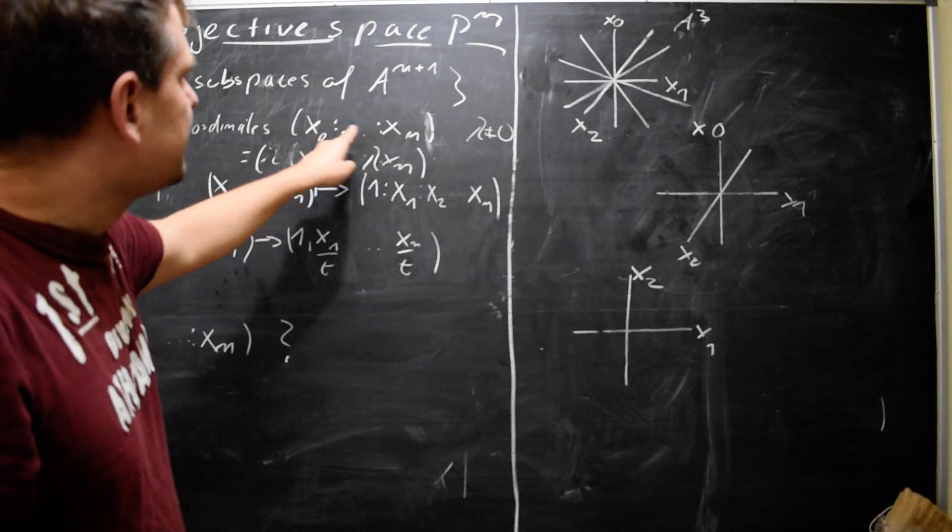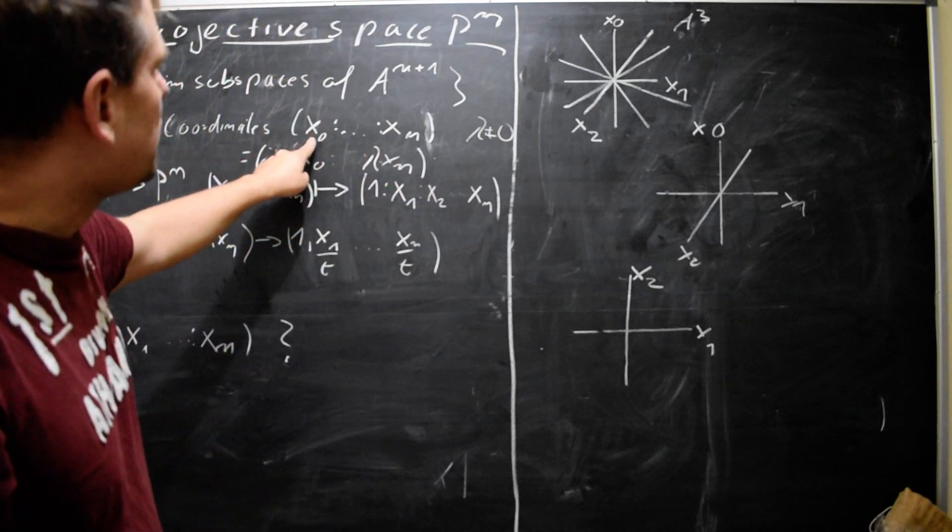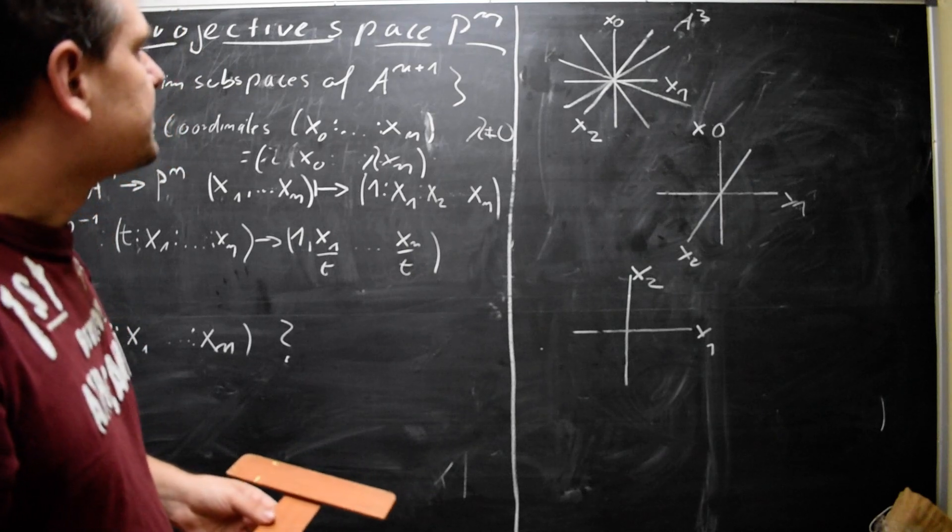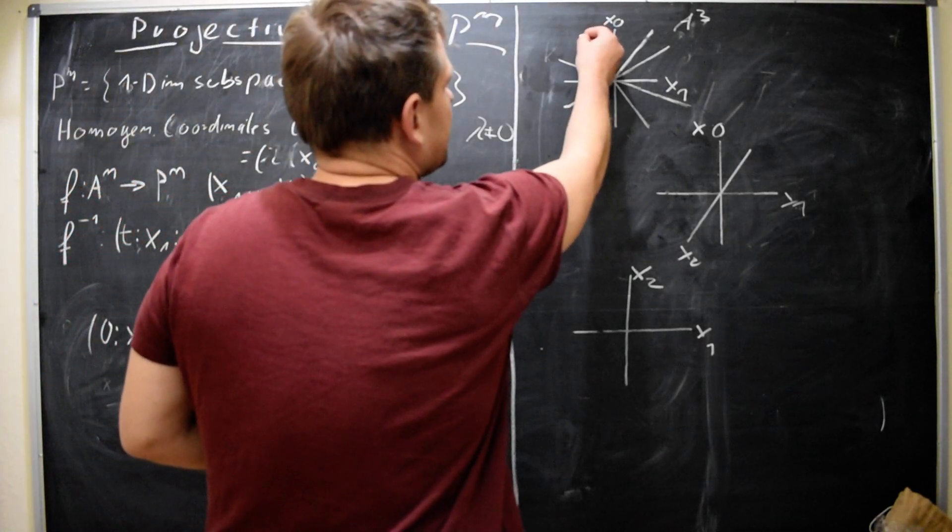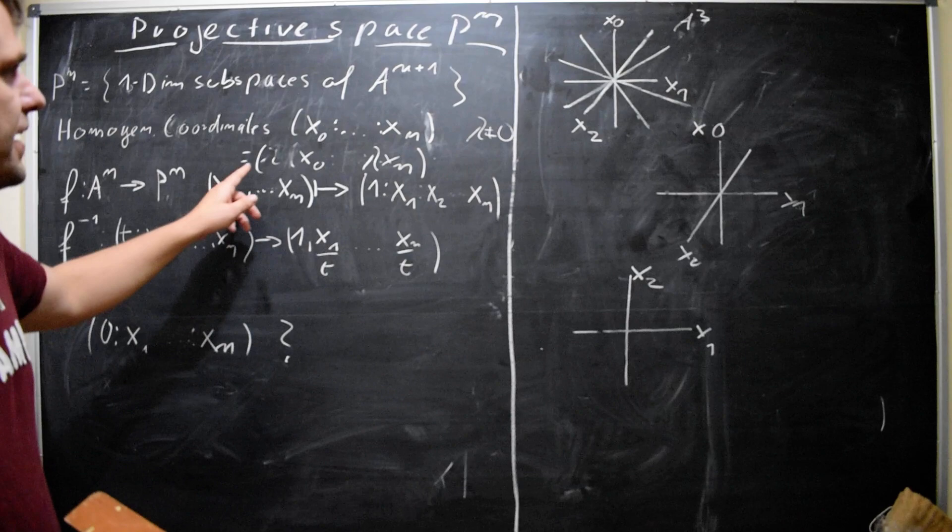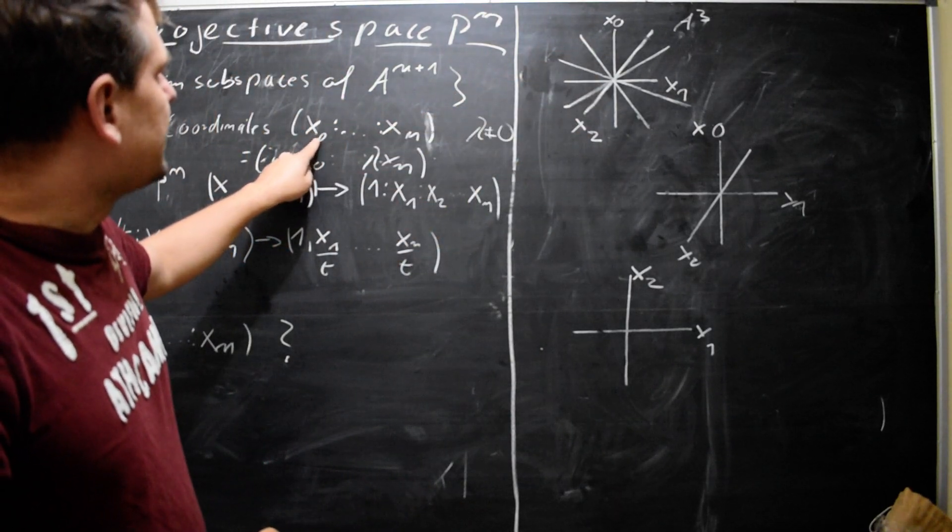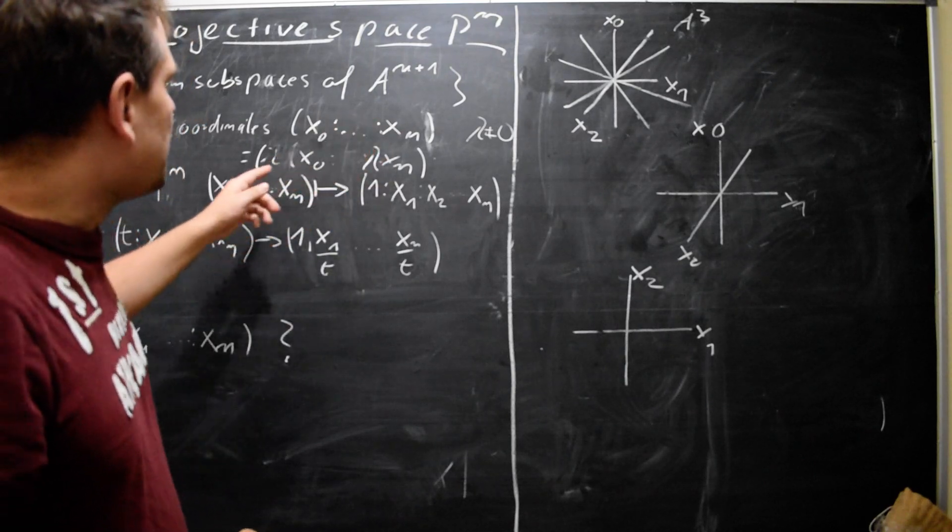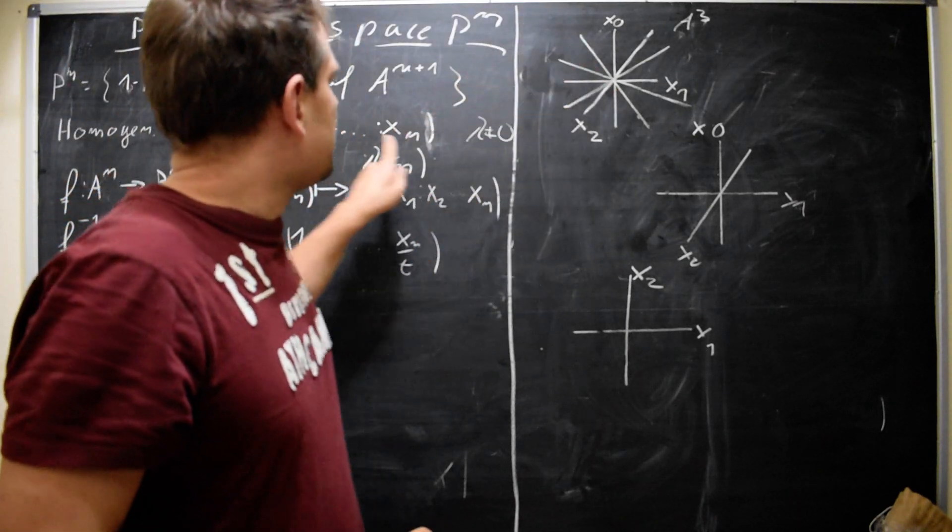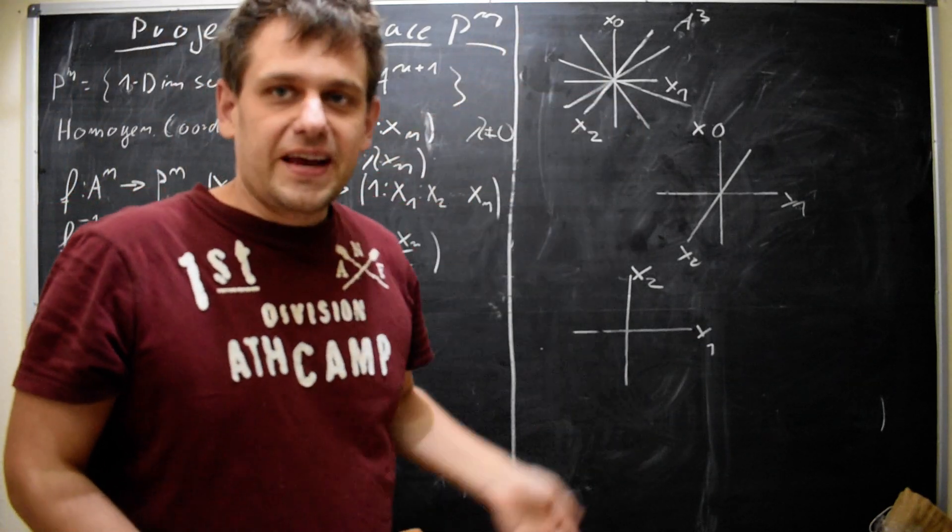And these coordinates have the peculiar feature that they are defined only up to a constant. So let me show you. This would be a coordinate in the projective space: (x_0 : x_1 : ... : x_n). This could be, for instance, this subspace here. But note that this is, so this would be a subspace spanned by the vector (x_0, x_1, ..., x_n). But, of course, the vector (λx_0, λx_1, ..., λx_n), so multiplying this vector by some non-zero lambda would span the same subspace.